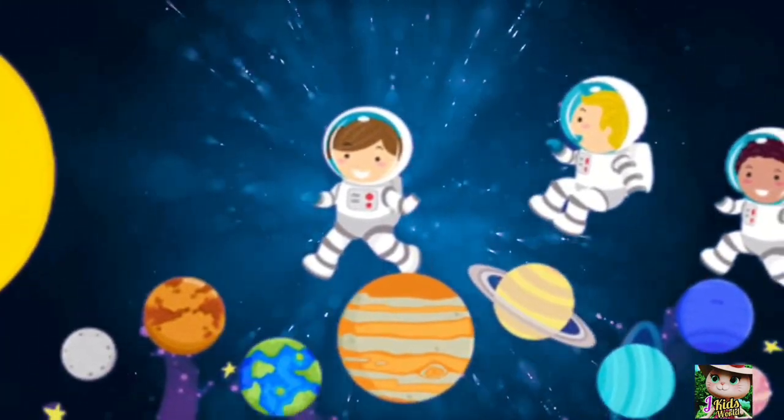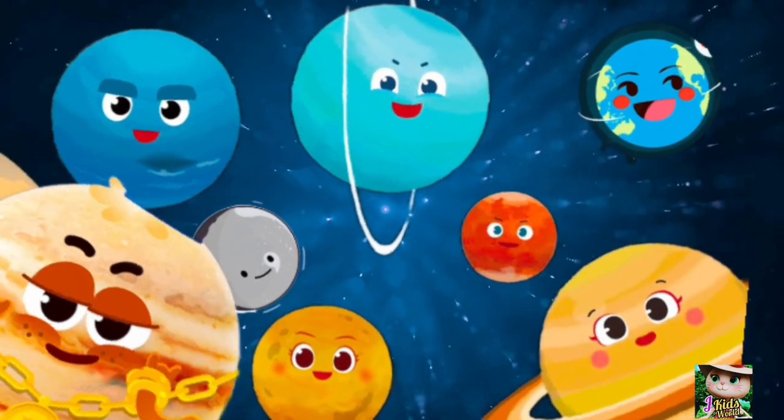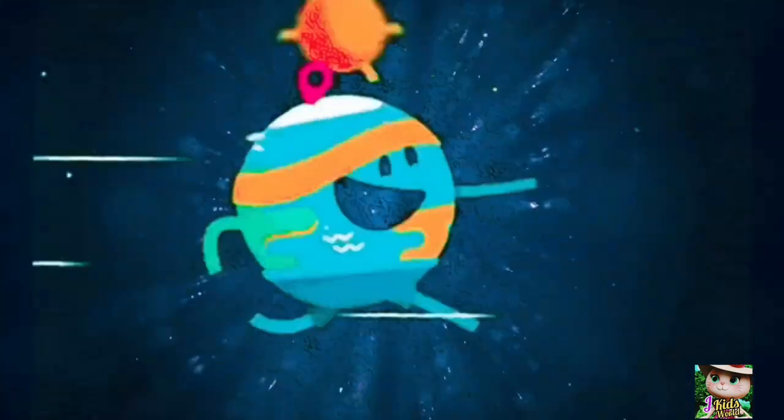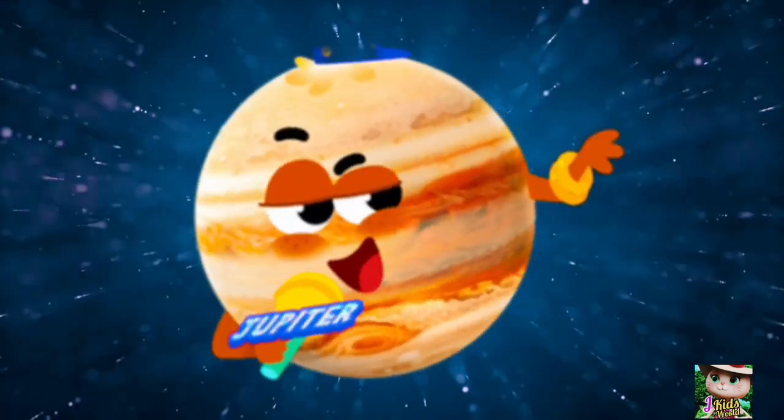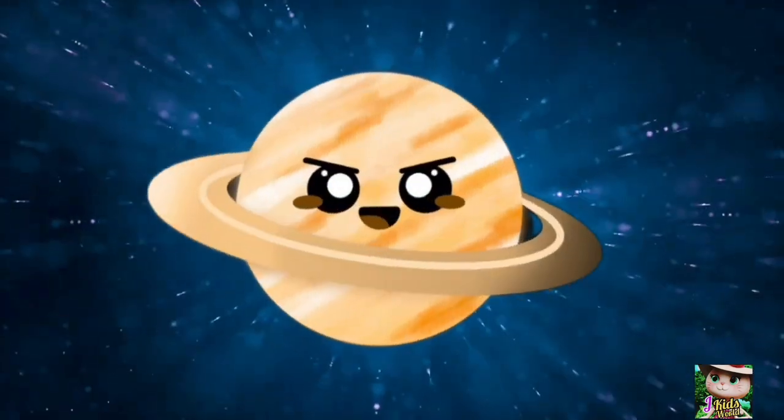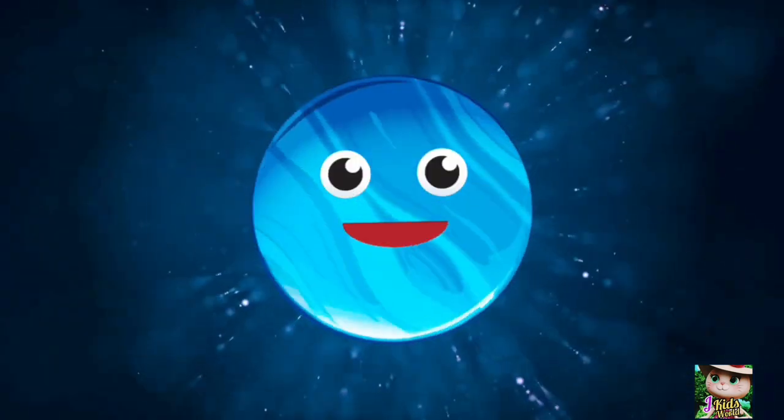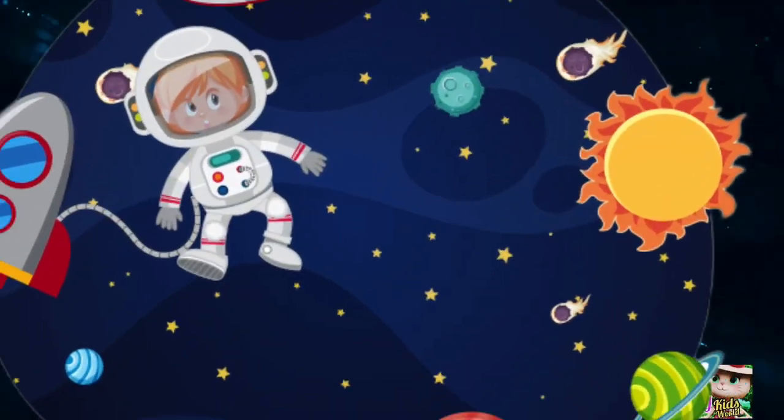The 8 planets of the solar system: Mercury, Venus, Earth, Mars, Jupiter, Saturn, Uranus, and Neptune. These are the planets of our solar system.